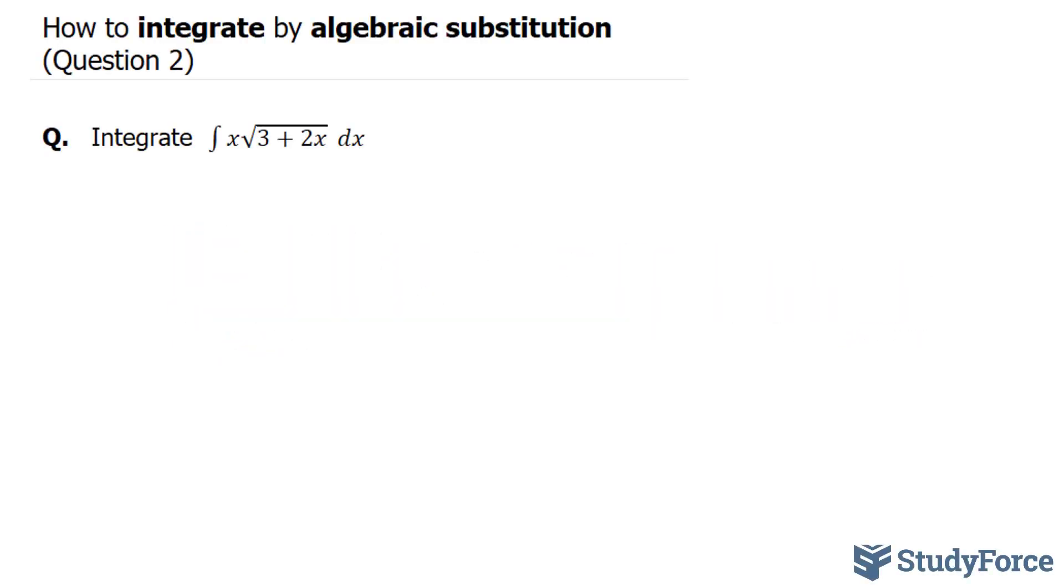In question 2 of this series, we have an expression containing fractional powers of a binomial. Take a look, we have x times the square root of 3 plus 2x, which can be written as the integral of x times (3 plus 2x) all powered to half, dx.